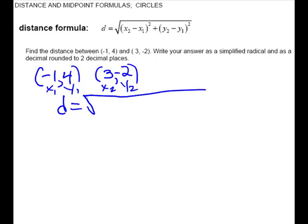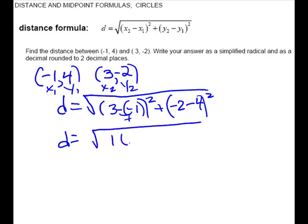I'm not going to rewrite the formula since I have it right there, so d equals the square root of the difference of the x's, so 3 minus negative 1, and then we square, plus the change in y's, so y₂ negative 2 minus y₁ 4, and then we square. So we have 4, and 4 squared gives us 16. This is negative 6, negative 6 squared gives us 36. We can add those together, so d equals the square root of 52.